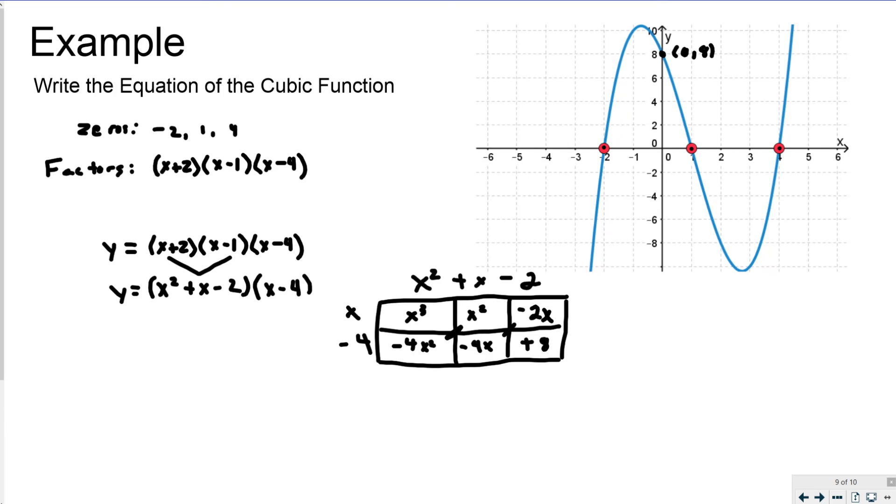So when I go ahead and write all this out and combine my like terms, I get y = x³. So that takes care of that box. x² take away 4x² is -3x². So that takes care of this and this box. And then -4x and -2x combined to be -6x. So that takes care of this box and this box. And then +8. And that takes care of that final box. And there is the general form, the standard form of this equation.